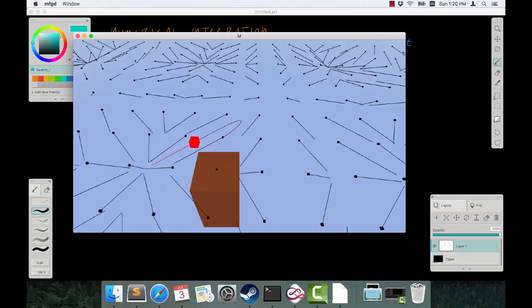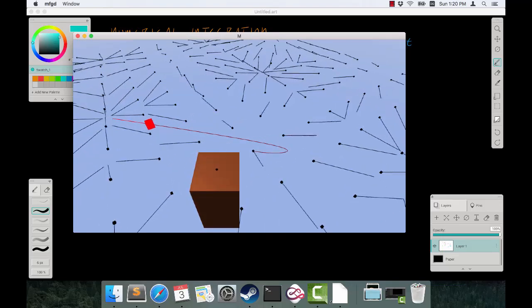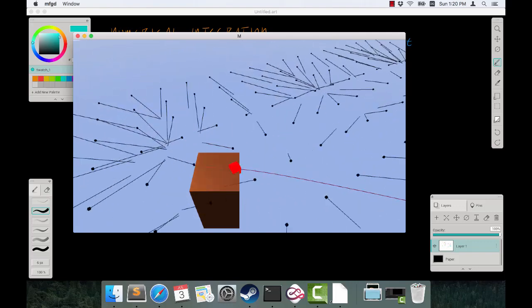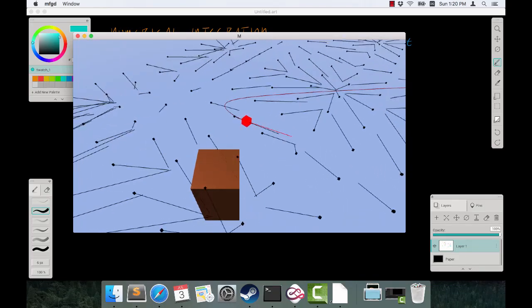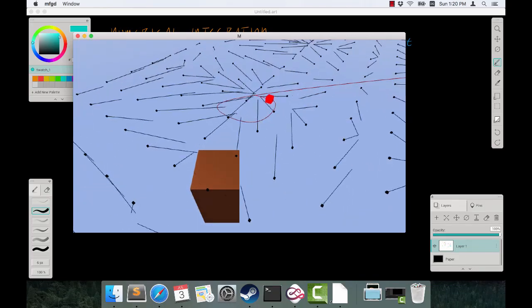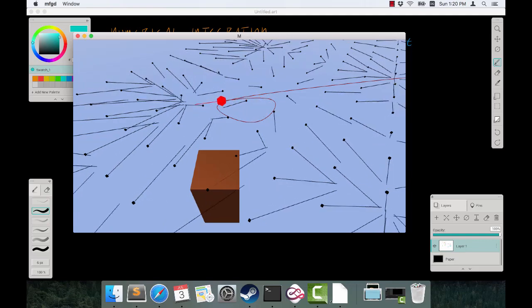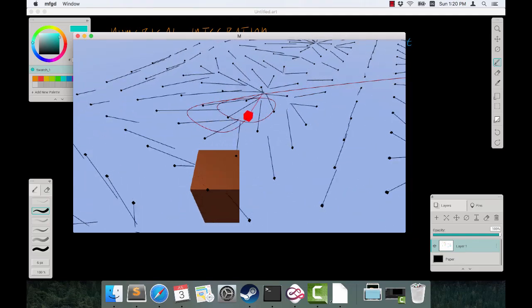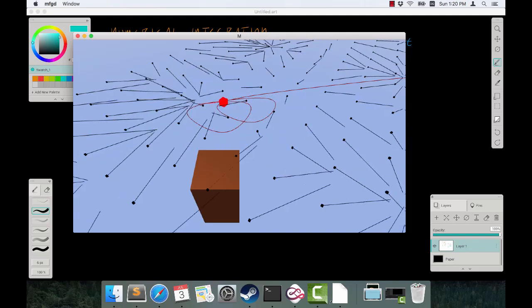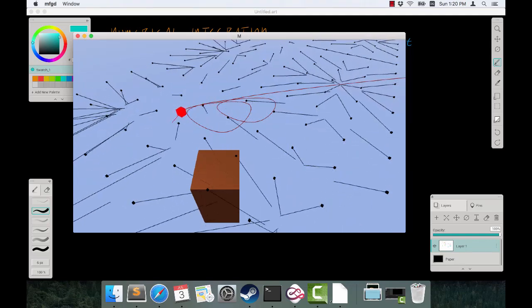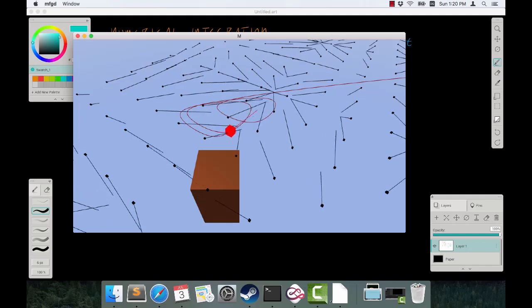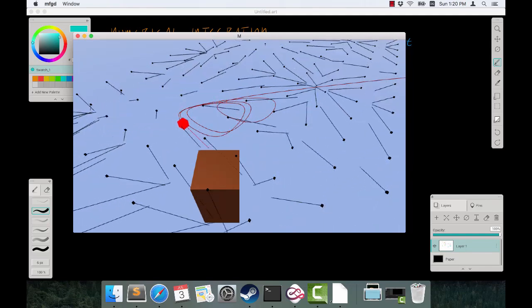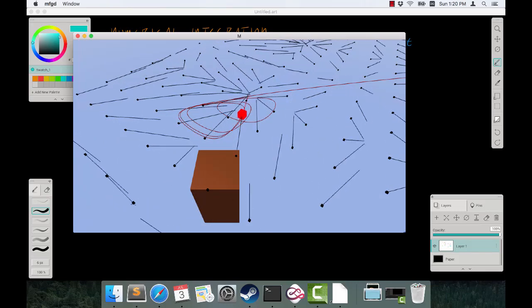You can see this black grid of slowly moving arrows. That is our visualization of our velocity field. And you'll see that the red cube is always following those black lines. It's always going in the direction that the black lines are going.